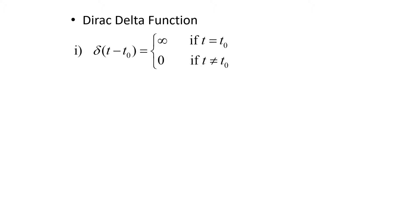And that's what leads us to the Dirac delta function. When that a value gets smaller and smaller and we get that spike of infinity, that's called the Dirac delta function. The Dirac delta function, delta of t minus t naught, is equal to infinity when t equals t naught, and it's equal to 0 if t does not equal t naught.